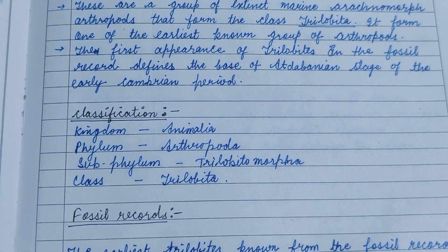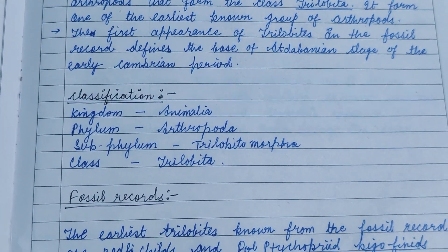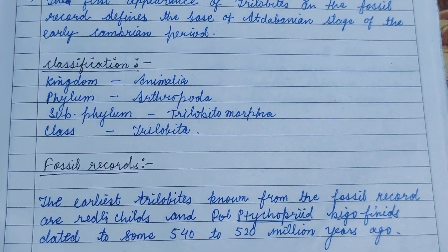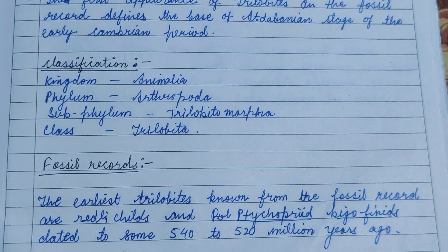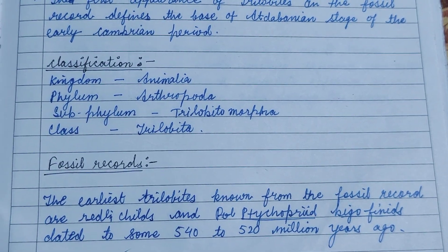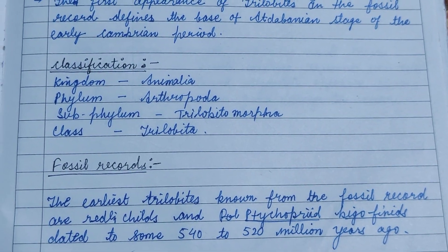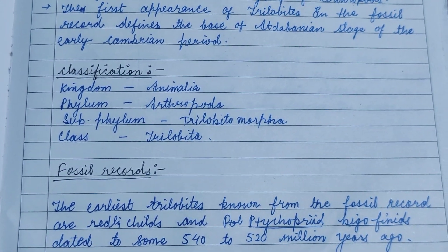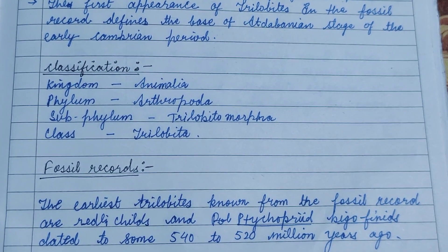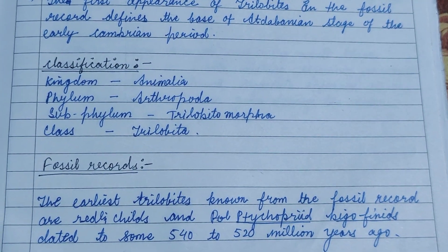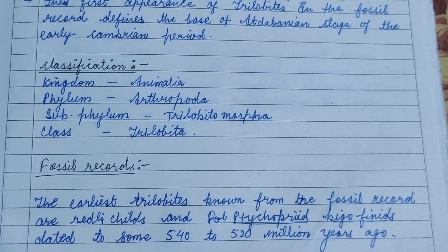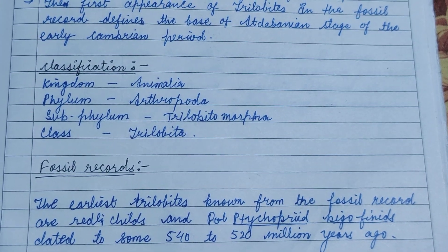The classification of trilobites is as follows. From the fossil record, the earliest trilobites known are dated to approximately 540 to 520 million years ago (Mya).